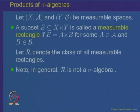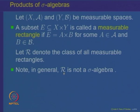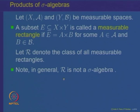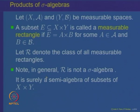We had already observed while discussing semi algebras, algebras, and sigma algebras, that sets of the type A×B, where A comes from one sigma algebra and B from another, need not form a sigma algebra — in fact, they need not even form an algebra. But since A and B are sigma algebras, they are also semi algebras, and the rectangles A×B surely form a semi algebra of subsets of X×Y.